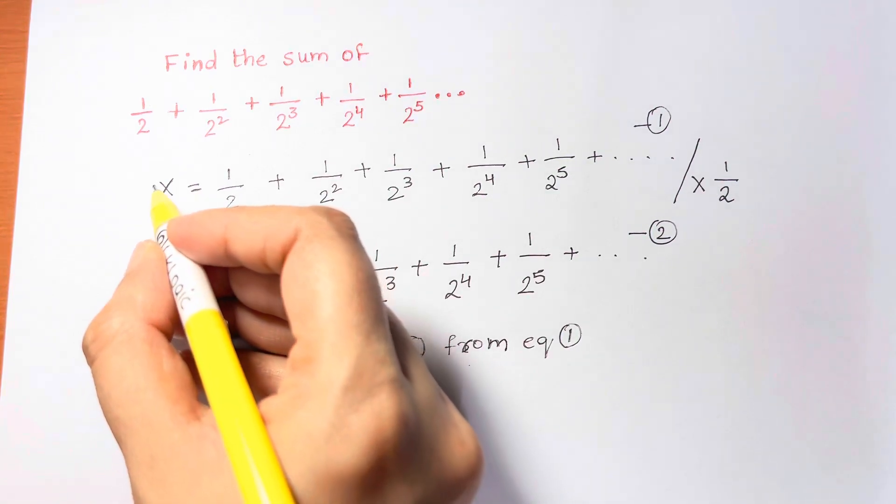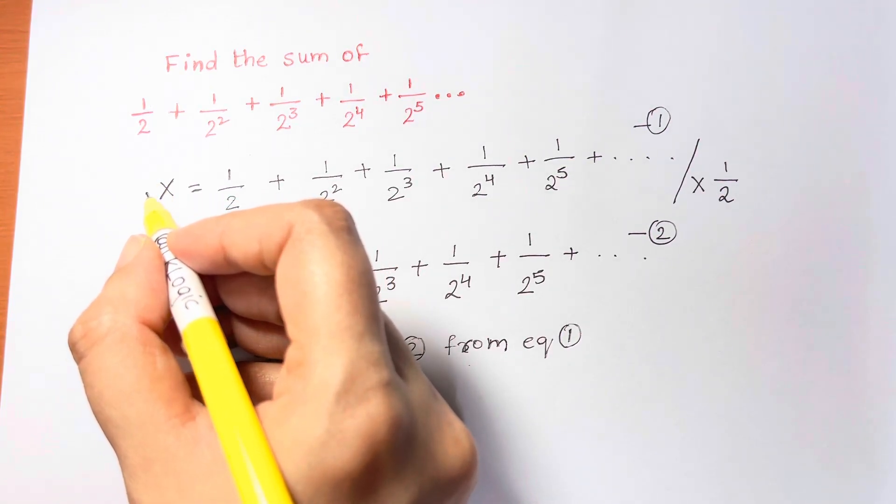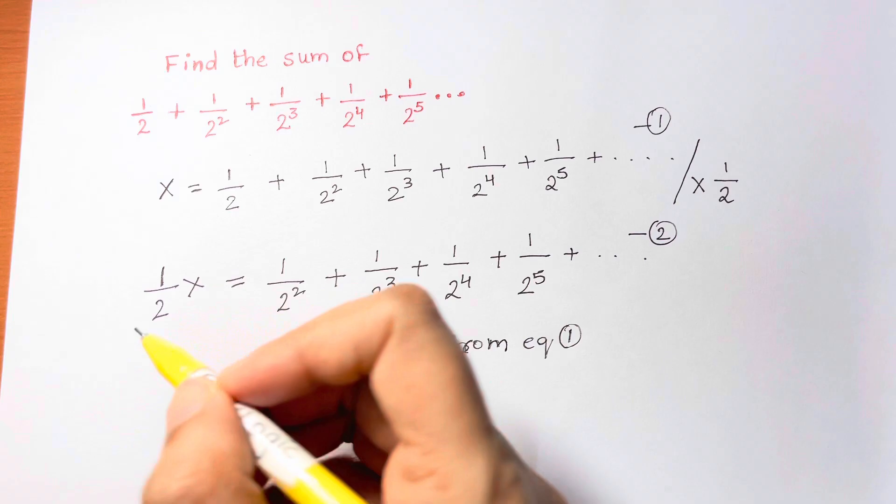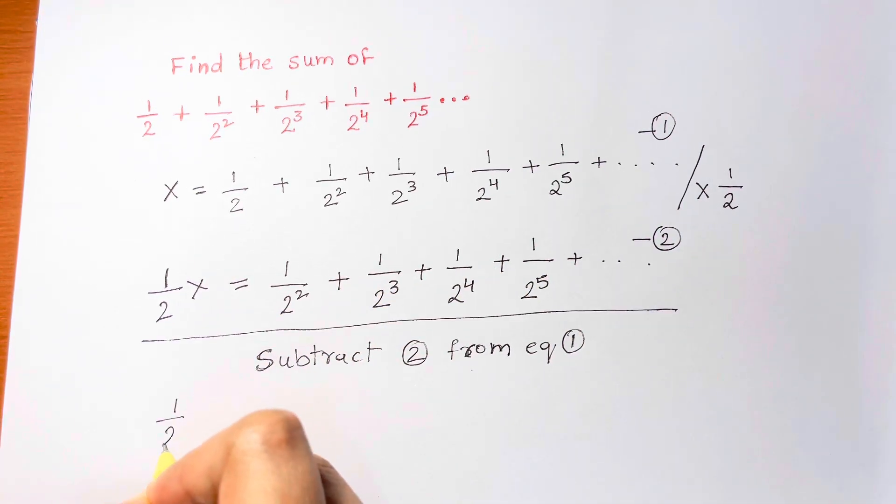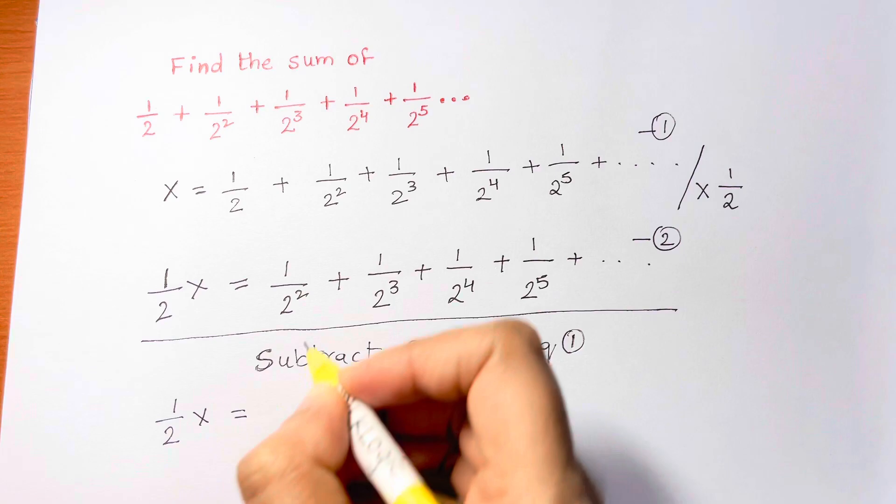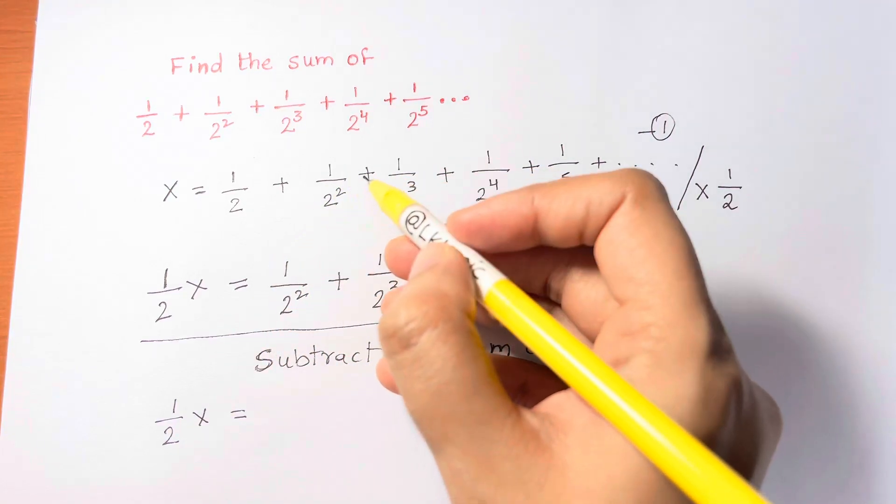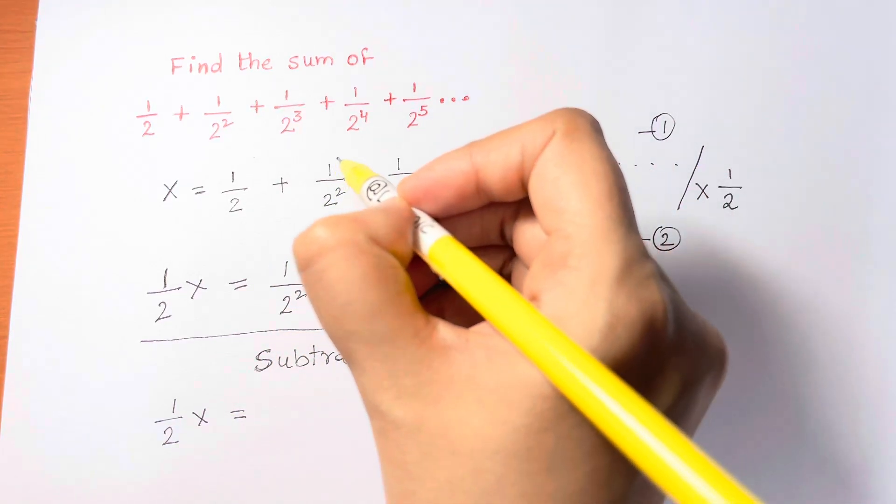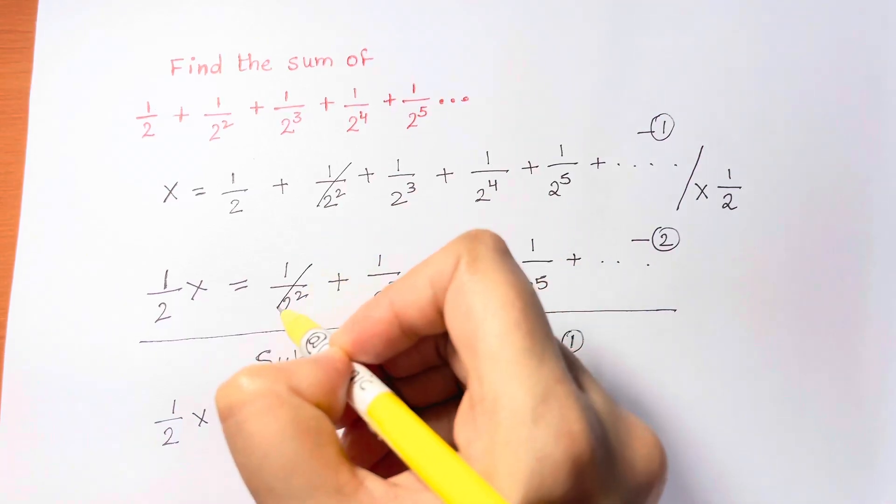This is 1, the coefficient of x is 1, so 1 minus half is obviously half. So half x is equal to—now you can see the similar terms here: 1 over 2 squared minus 1 over 2 squared, 1 over 2 cubed minus 1 over 2 cubed.